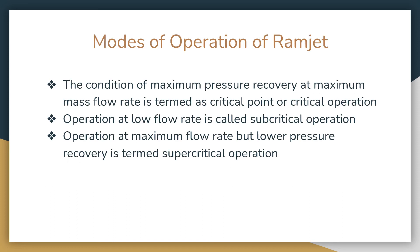To summarize: the condition of maximum pressure recovery and maximum mass flow rate is termed critical operation, also called the design operating condition. The condition of operation at low flow rate is subcritical operation, or low-speed operating condition. The operation at maximum flow rate but with low pressure recovery is termed supercritical operation, also called very high-speed operation. Critical operation is the best, offering the highest efficiency, while the other two lead to instability.